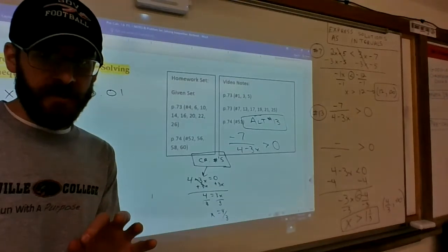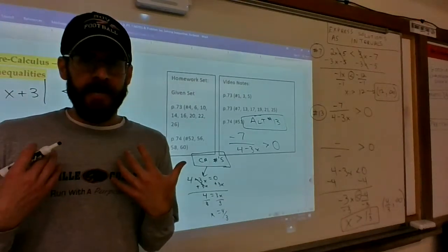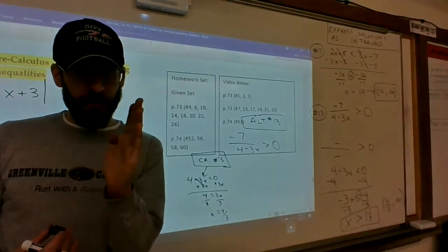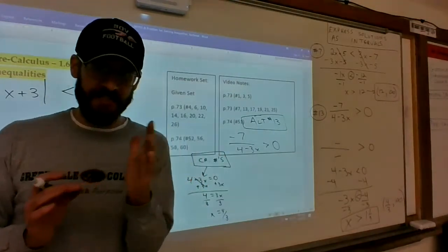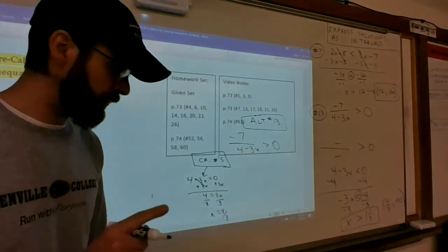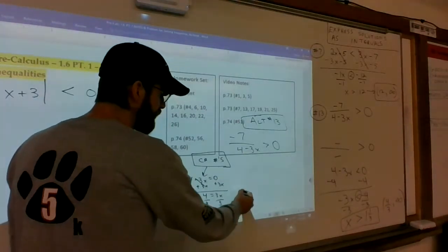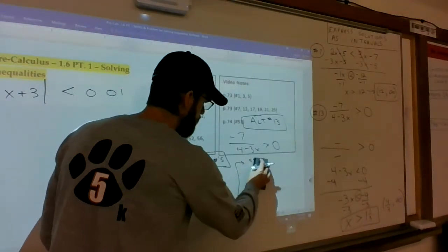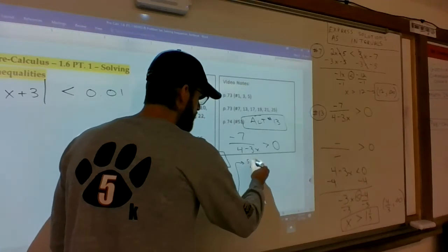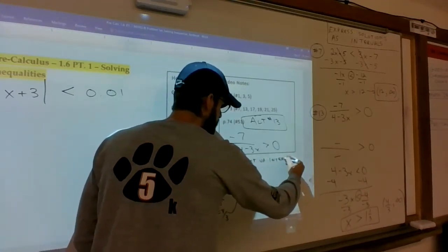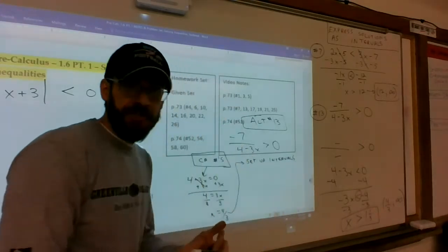Then you ask yourself, if 4/3 is my only critical number, that's the only place where things switch from maybe positive to negative if I were to graph this thing. So you can set up intervals.